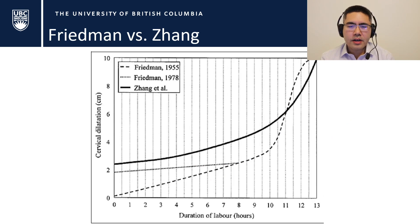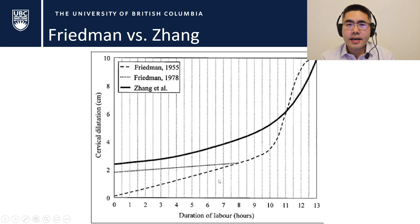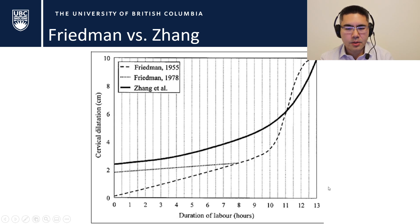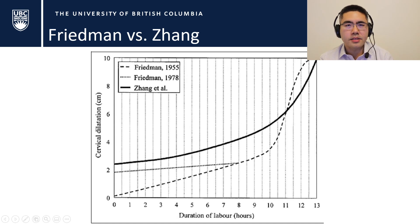You can actually see this when we overlap the curves. The bottom two dashed lines are Friedman's curves — as soon as they hit that 4 centimeter mark you see rapid skyrocketing upwards until they reach full dilation in a matter of a couple of hours. Whereas Zhang's curve shows really slow gradual progress until it hits about 6 centimeters, and then we start seeing that rise upwards.